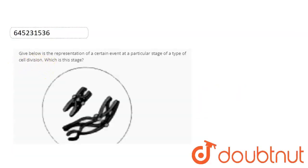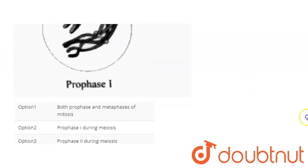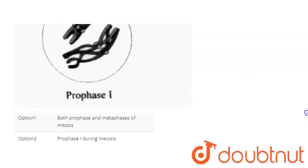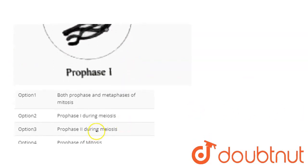Hello students, let's start the question. The question is: given below is the representation of a certain event at a particular stage of a type of cell division. Which is this stage? So here you can see a particular stage of cell division which we need to recognize. Okay, let's begin with the options. First,